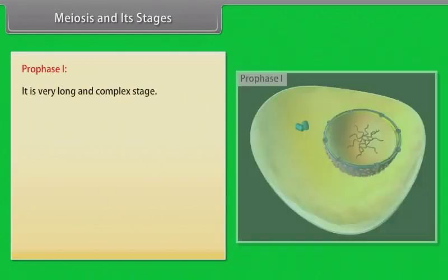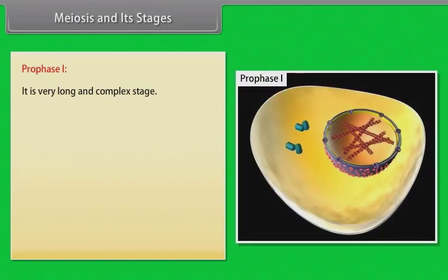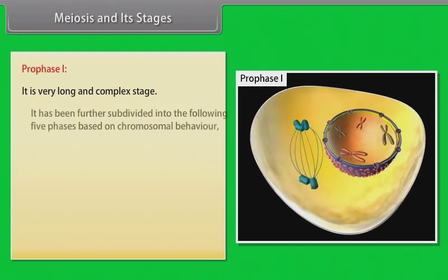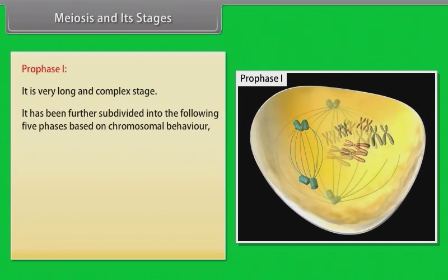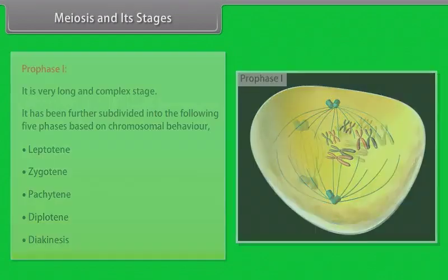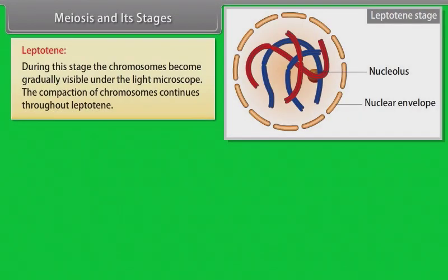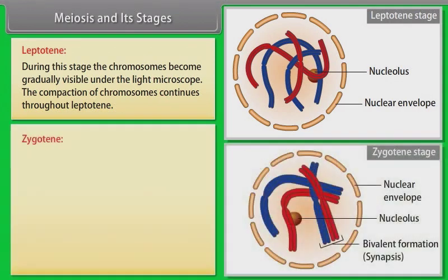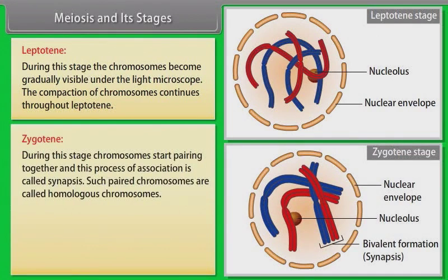The first stage of meiosis I is prophase I. It is very long and more complex in comparison to prophase stage of mitosis. It has been further subdivided into the following five phases based on chromosomal behavior: leptotene, zygotene, pachytene, diplotene, and diakinesis. During leptotene stage, the chromosomes become gradually visible under the light microscope. The compaction of chromosomes continues throughout leptotene.